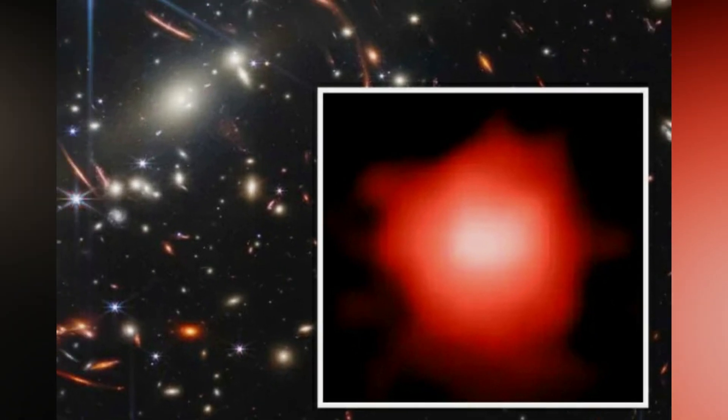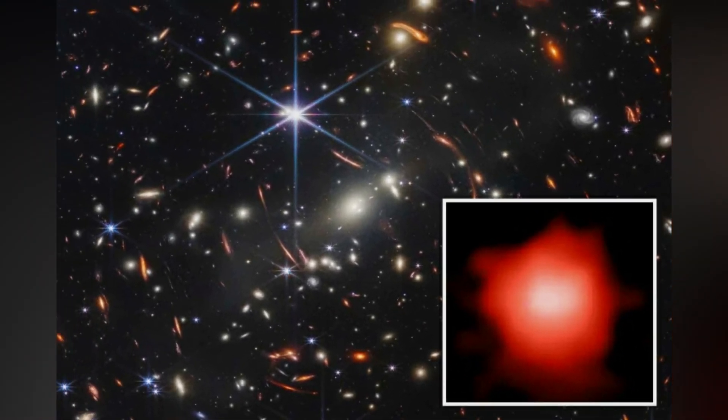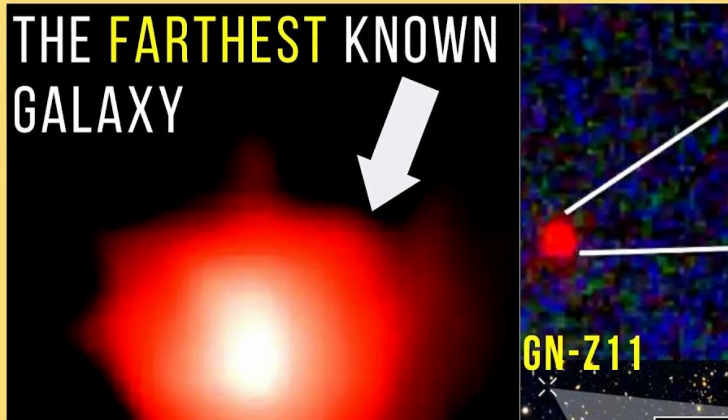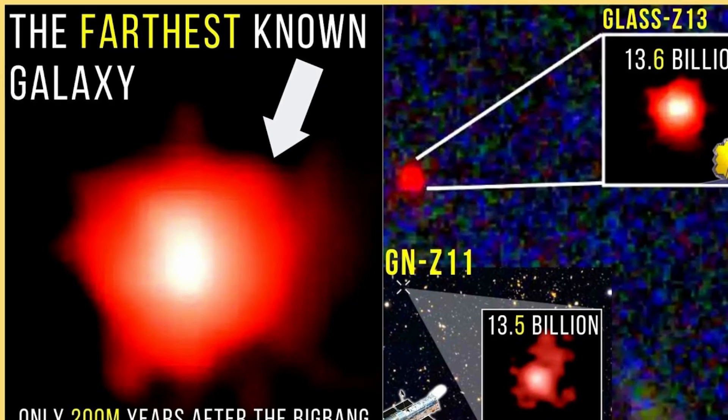The length of time our galaxy has existed is extremely large. Compared to GLZ13, another galaxy candidate identified by the James Webb Space Telescope at a redshift of 13.1, this one is five times more massive in terms of its stellar mass.